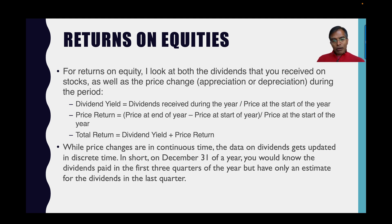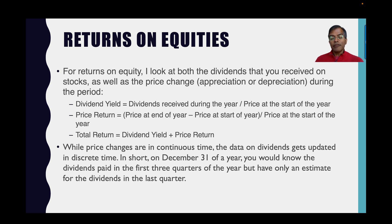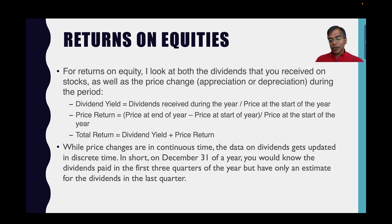Price changes are continuous, available at every moment of every day, but dividends get updated only in discrete time. So the returns you see for a year will reflect the actual price change during the year, but my dividends will only be through September 30th — the last quarter's dividends are often not known. So I use the first three quarters of actual dividends and estimated dividends for the fourth quarter to get returns as of January 1st of any year. That number might be slightly different from the actual return, and I go back and fix it after I get the actual dividends later in the year.